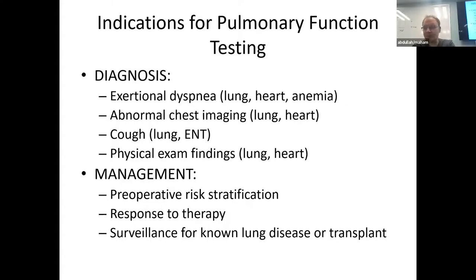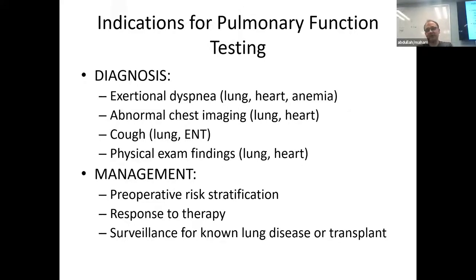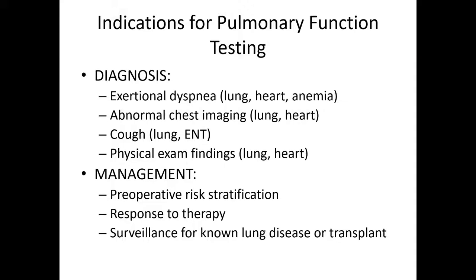PFTs can also help answer questions about abnormal lung imaging — incidental findings on CT like fibrotic changes or bronchiectasis — and give a measure of how much that's compromising lung function. For management, the mainstay in pulmonary clinic is response to therapy: following patients with COPD, asthma, or interstitial lung disease with serial PFTs every three to six months to see if disease is worsening or progressing. Preoperative risk stratification is useful because premorbid lung function is a good indicator of post-op pulmonary complications. Finally, surveillance for known lung disease — ILD, asthma, COPD.